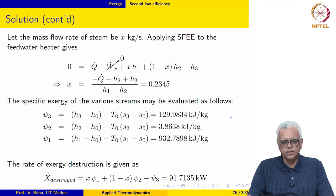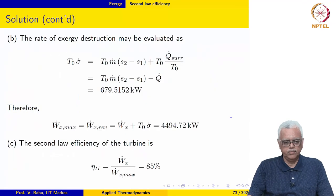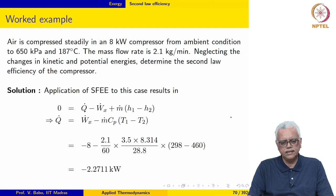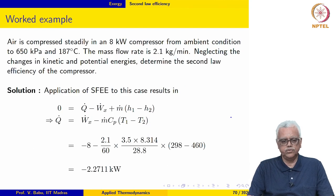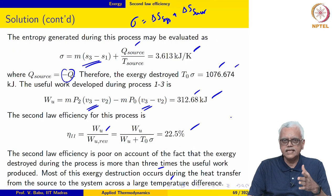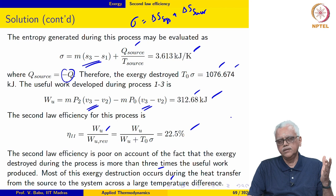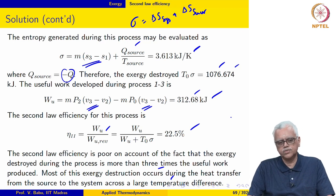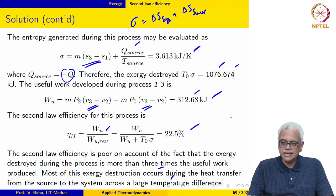The next three examples involve steady flow processes, and the last example we will look at is that of a cyclic process. So we have looked at three examples involving non-flow, non-cyclic processes. Then we will look at three examples involving steady flow processes, and we will close this module by looking at an example of a cyclic process.